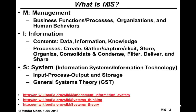Information has two parts. First is the content. We can describe the content based on three categories: data, information, and knowledge. We will get to this later.